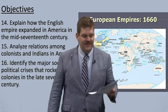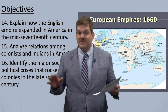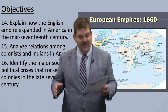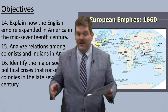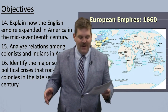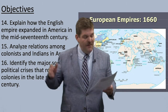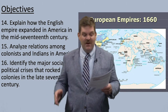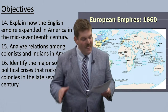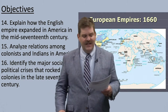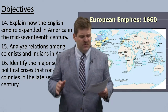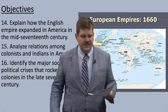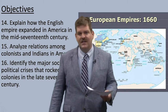We have three objectives today. By the end of this period, you should be able to: number 14, explain how the English Empire expanded in America in the mid-17th century; number 15, analyze relations among colonists and Indians in America; and number 16, identify the major social and political crises that rocked the colonies in the late 17th century.